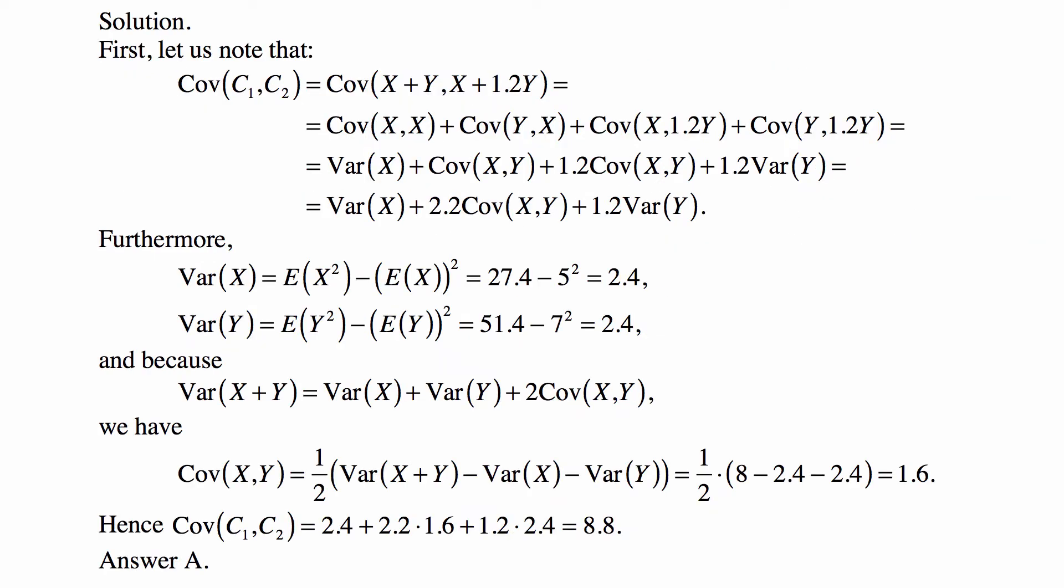Okay, so we first note that Cov(C₁, C₂) is really Cov(X + Y, X + 1.2Y). And now the most important thing to remember about covariance is that it's a linear operator in each of its variables. So covariance of X + Y with anything is a sum of covariance of X with that thing and covariance of Y with that thing,